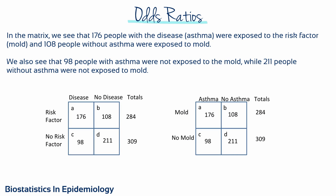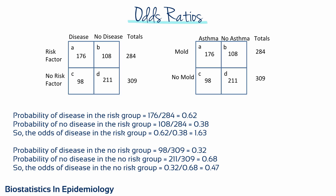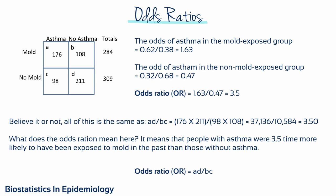In the matrix, 176 people with the disease (asthma) were exposed to the risk factor (mold), and 108 people without asthma were exposed to mold. Also, 98 people with asthma were not exposed to mold, while 211 people without asthma were not exposed to mold. Below the table, you can see the two probabilities to calculate the odds of disease in the risk group and the two probabilities for the no-risk group. Given these two odds, the odds ratio for this matrix is 3.5 — equivalent to A times D divided by B times C. This means people with asthma were 3.5 times more likely to have been exposed to mold in the past than those without asthma.